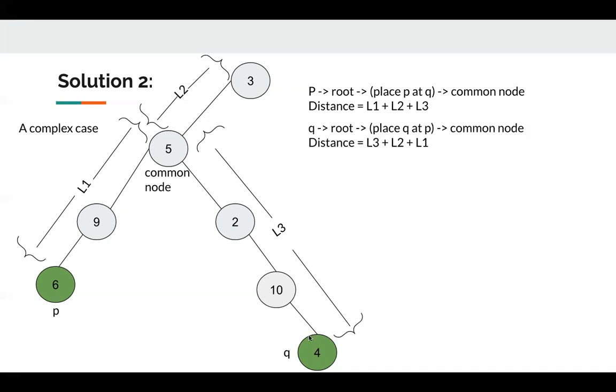For node Q, we do something similar. We ask node Q to go to root node. When it's reaching the root node, we place Q at node P, then ask it to come to common node, so the distance is L3 plus L2 then plus L1. We find the distance is the same. So if they work in this way, finally, they will meet at this common node, right?